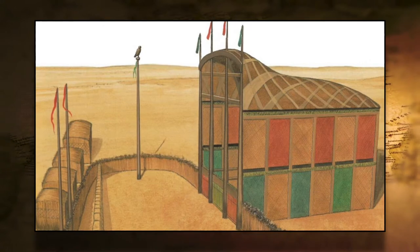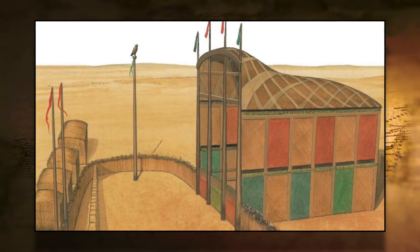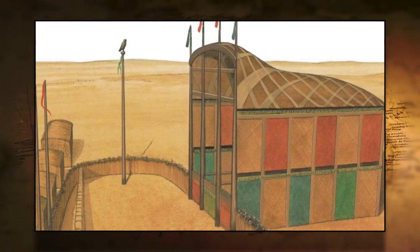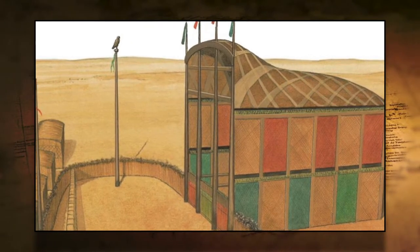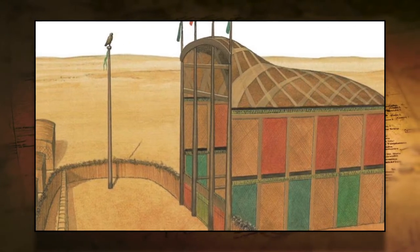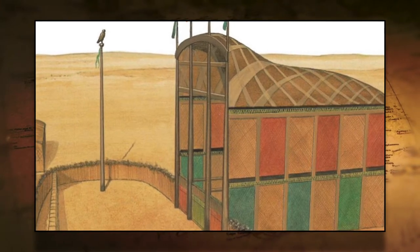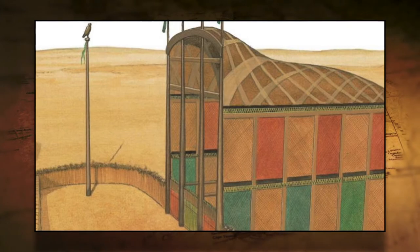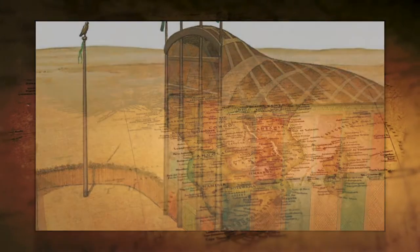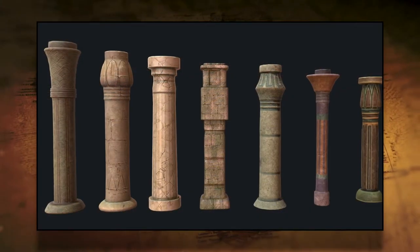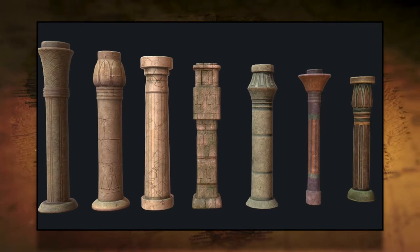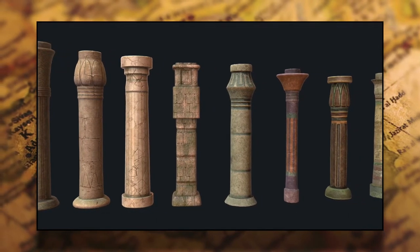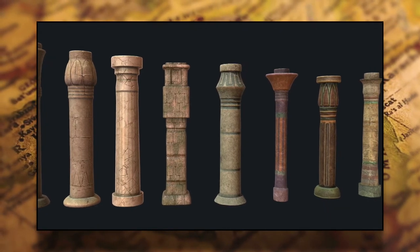Early evidence for cult centers are found at sites such as Butoh, the city of the cobra, and other pre-dynastic and early dynastic period sites. For example, the reconstruction depicted here is a wood and reed temple from Hierakonpolis. In these early temples, pillars and posts would have been made from bundles of reeds or other natural materials. These would go on to shape the various styles of columns in Egyptian architecture, as the early houses of the gods were emulated in a new medium: stone.